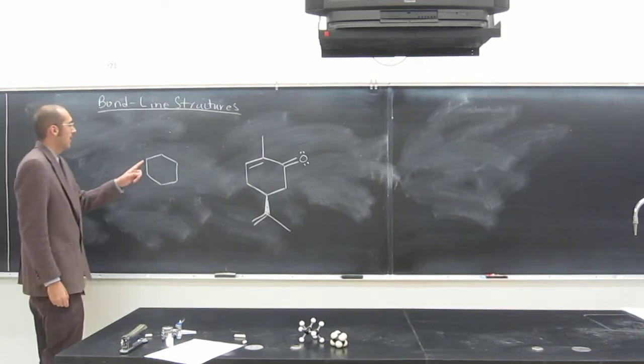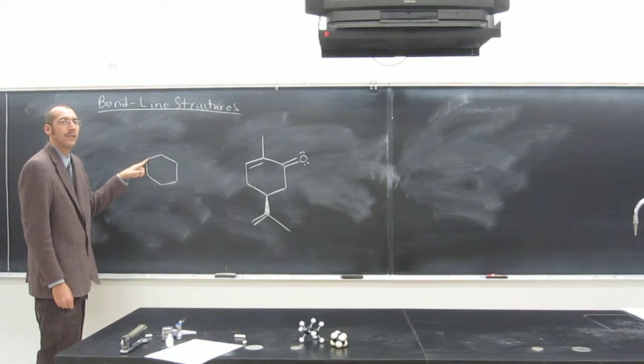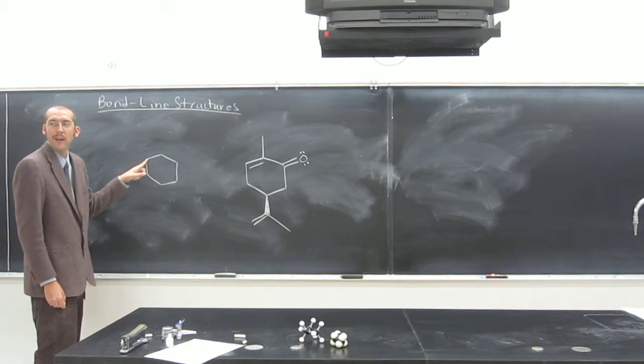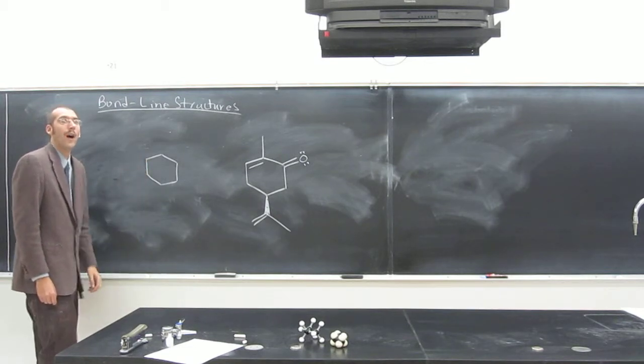So what type of atom is there? Carbon. And how many carbons are attached to it? Two. And how many hydrogens? Two. Right?